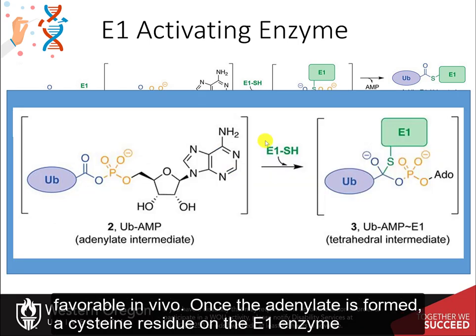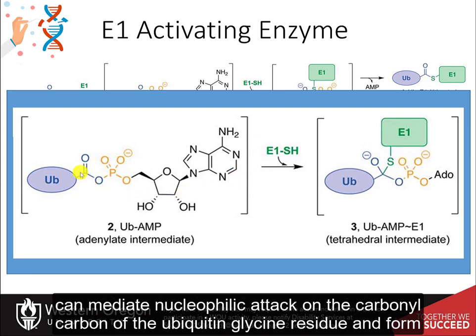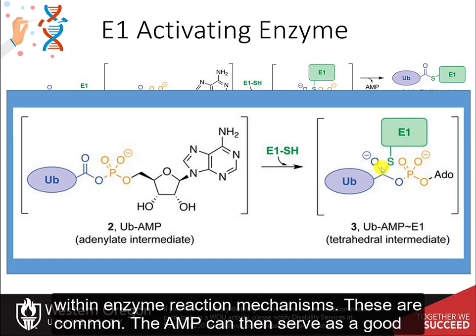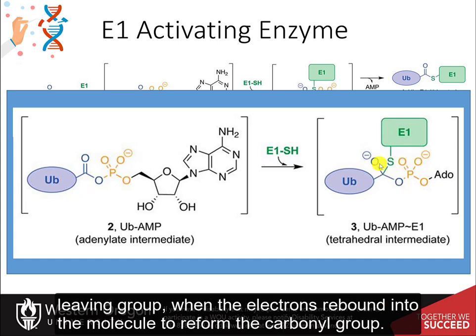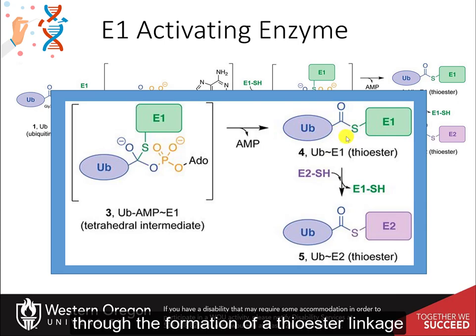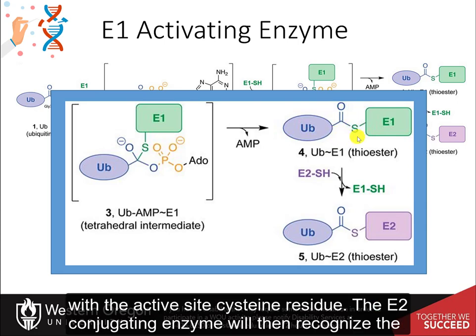Once the adenylate is formed, a cysteine residue on the E1 enzyme can mediate nucleophilic attack on the carbonyl carbon of the ubiquitin glycine residue and form an oxyanion intermediate. Notice that oxyanion intermediates are common within enzyme reaction mechanisms. The AMP can then serve as a good leaving group when the electrons rebound into the molecule to reform the carbonyl group, and the E1 enzyme is left covalently linked to the ubiquitin through the formation of a thioester linkage with the active site cysteine residue.